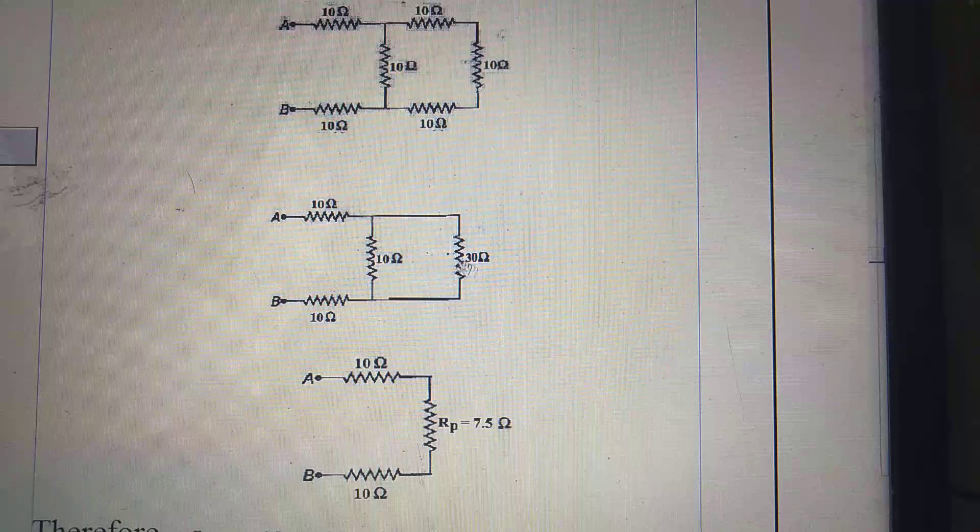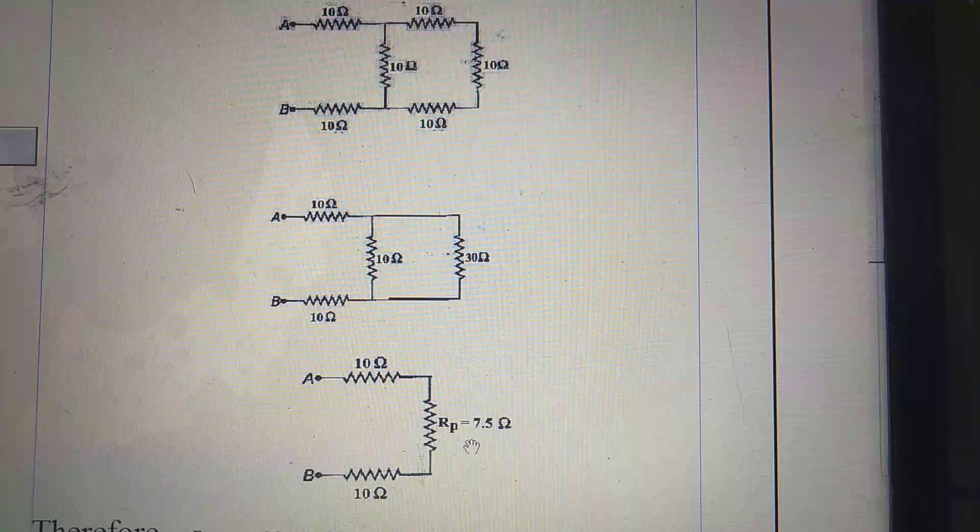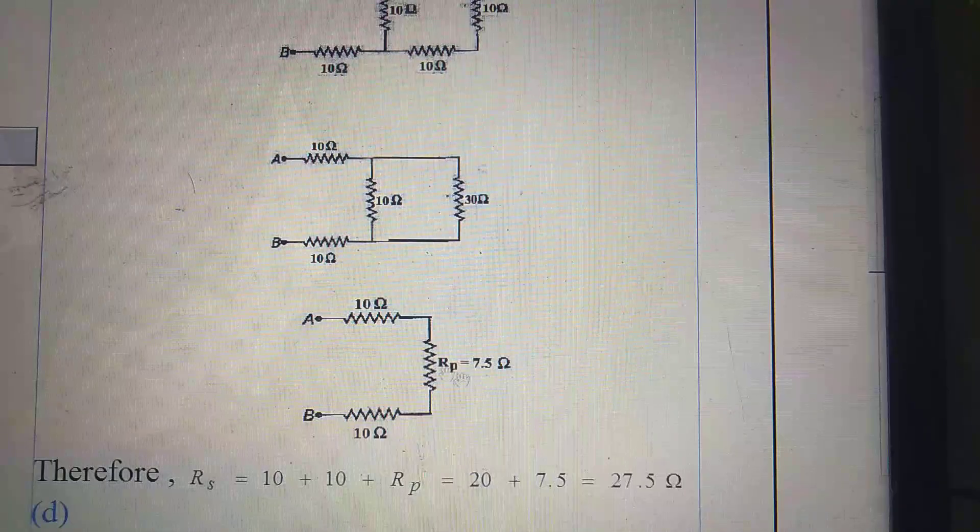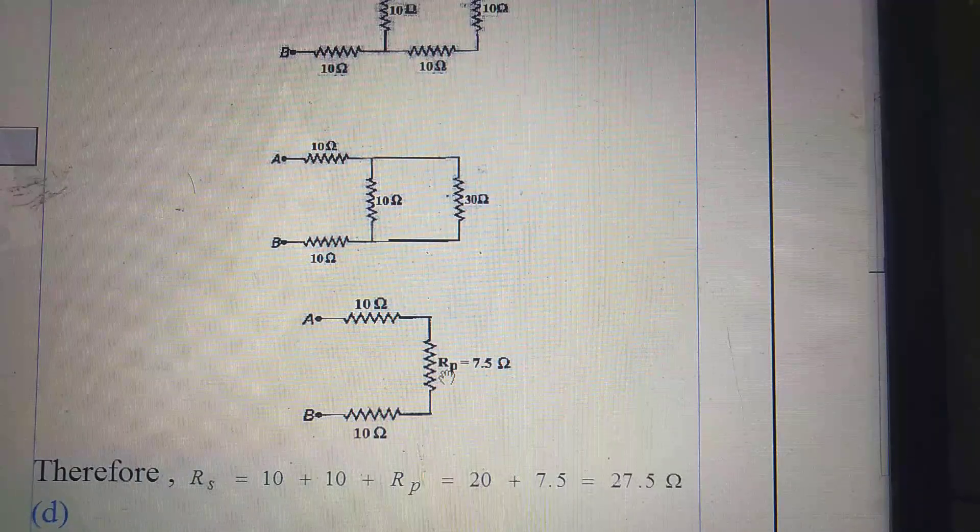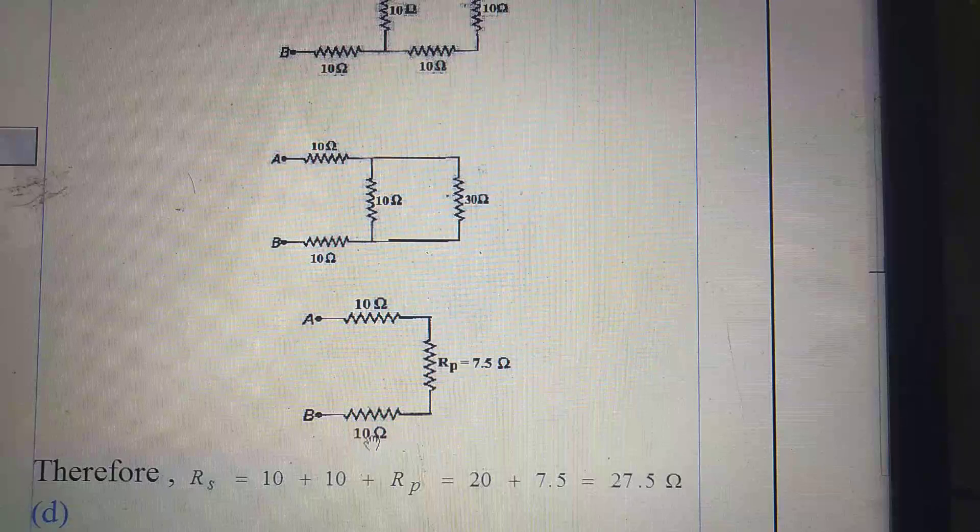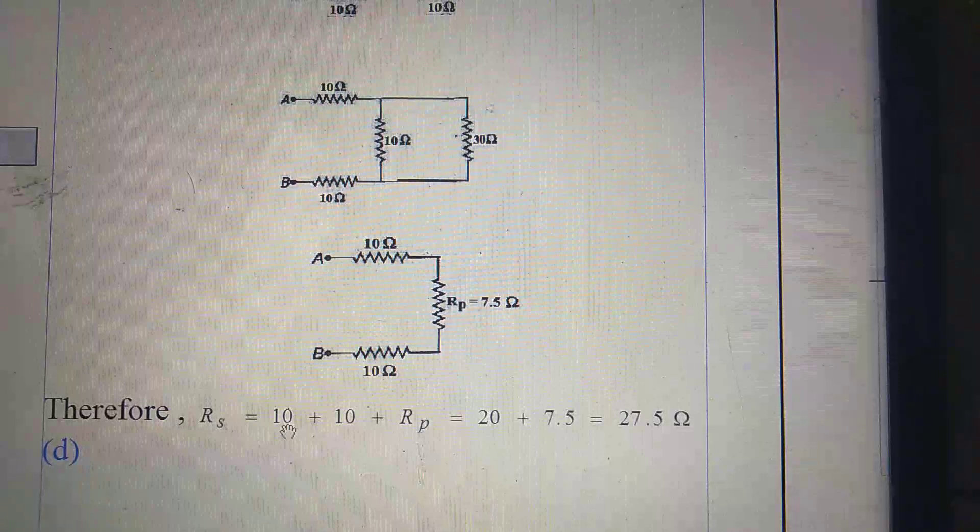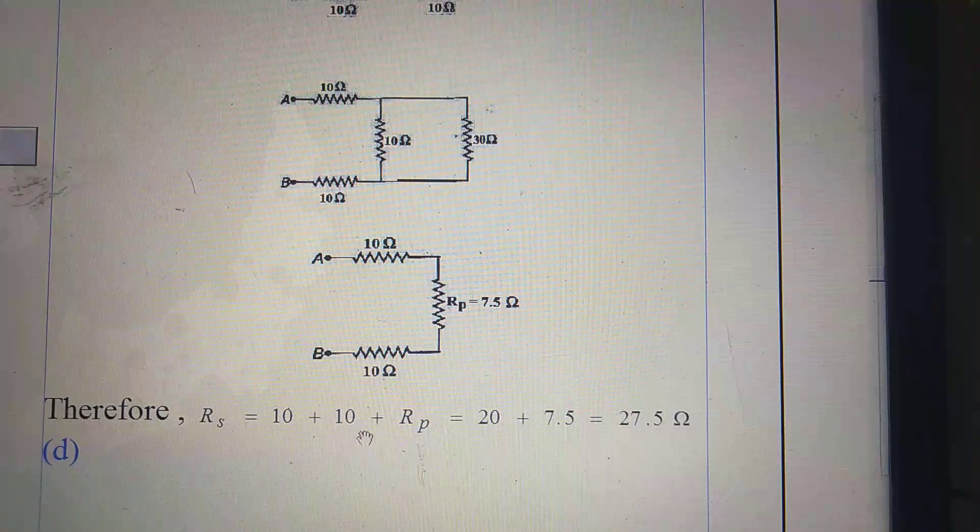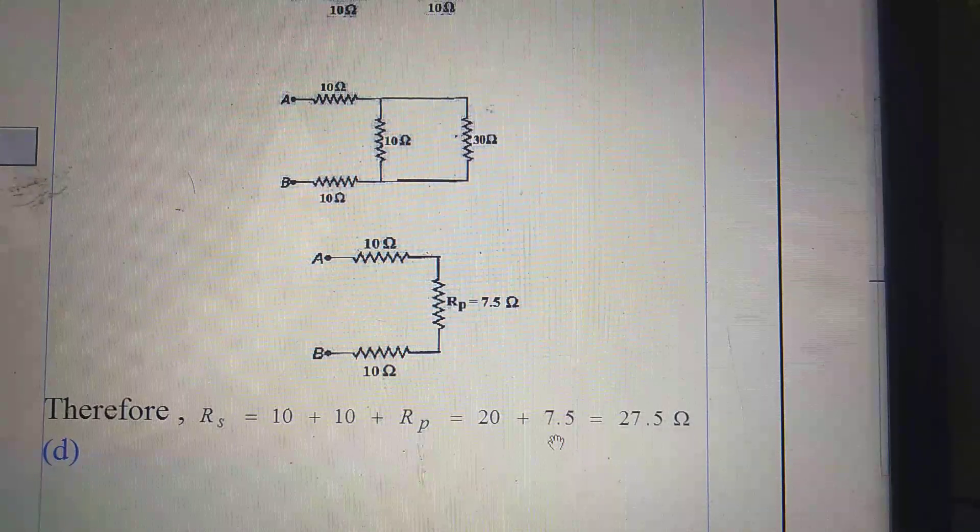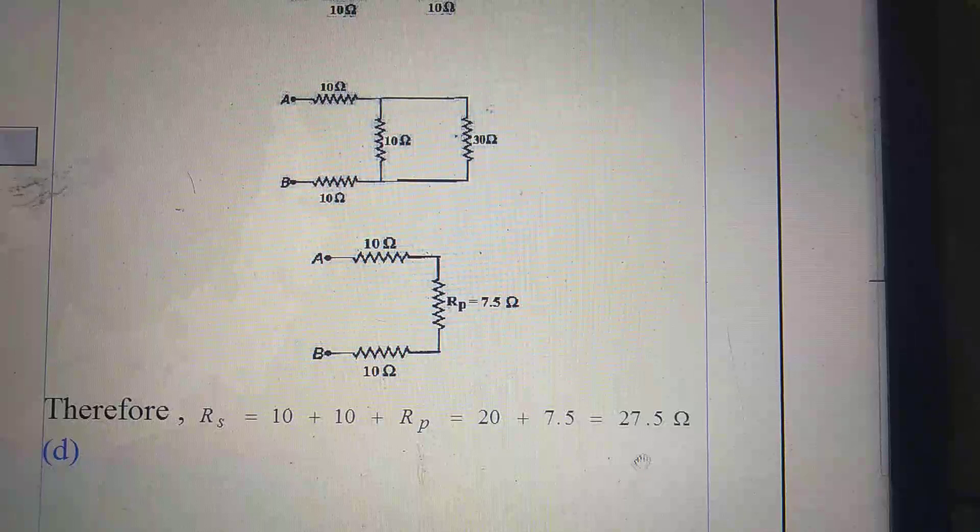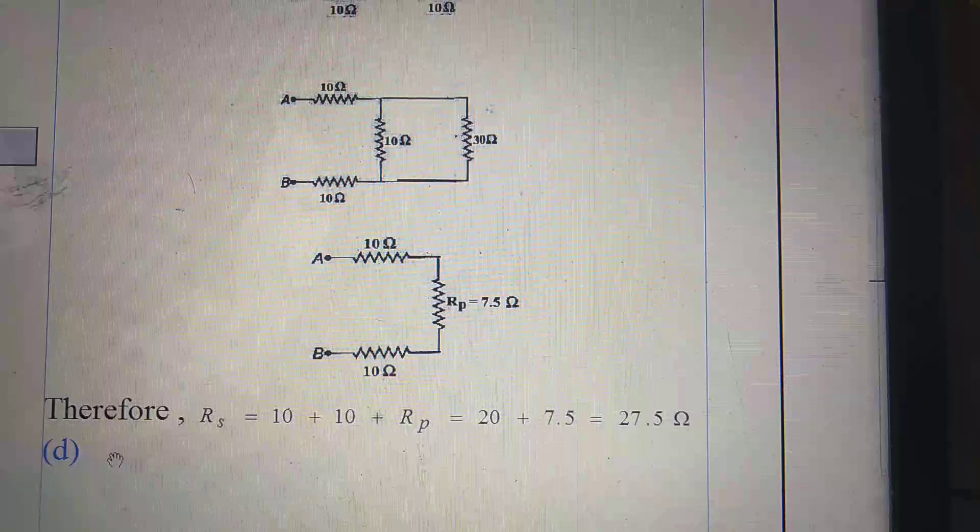After calculation, this parallel combination value comes out to be 7.5 ohm. 10 ohm, 7.5 ohm and this 10 ohm. These three resistances are in series. Therefore, R is equal to 10 plus 10 plus Rp. That is 10 plus 10, 20. Rp's value is 7.5. After calculation, the final value will be 27.5 ohm. The right option is D.